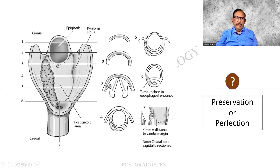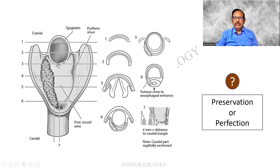The epiglottis, the pyriform sinus — this is again a notorious area for malignancy. As multiple bits are being given, the extent of tumor invasion can be assessed. In this case, it is almost close to the esophageal entrance, which is something to worry about. What is important here is preservation of the specimen or correction — you people should decide.